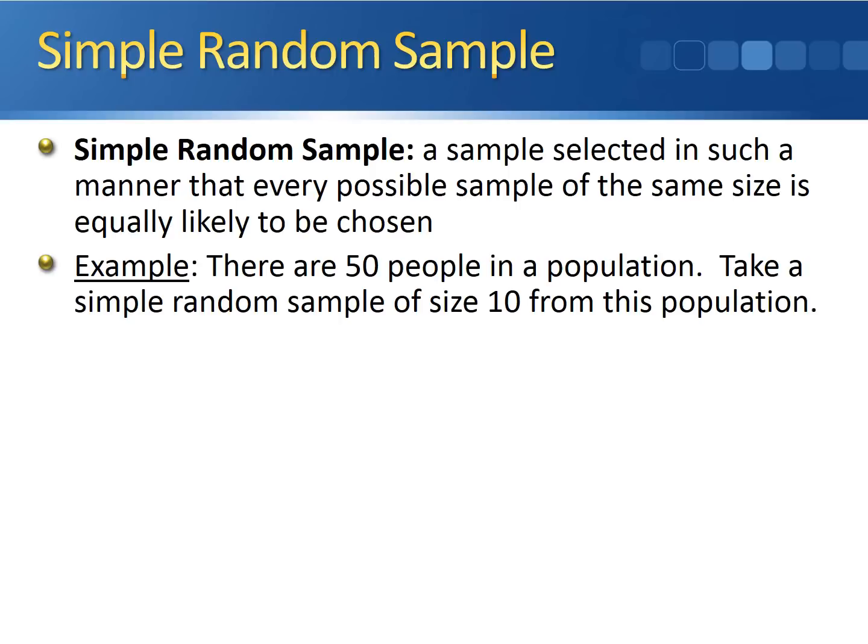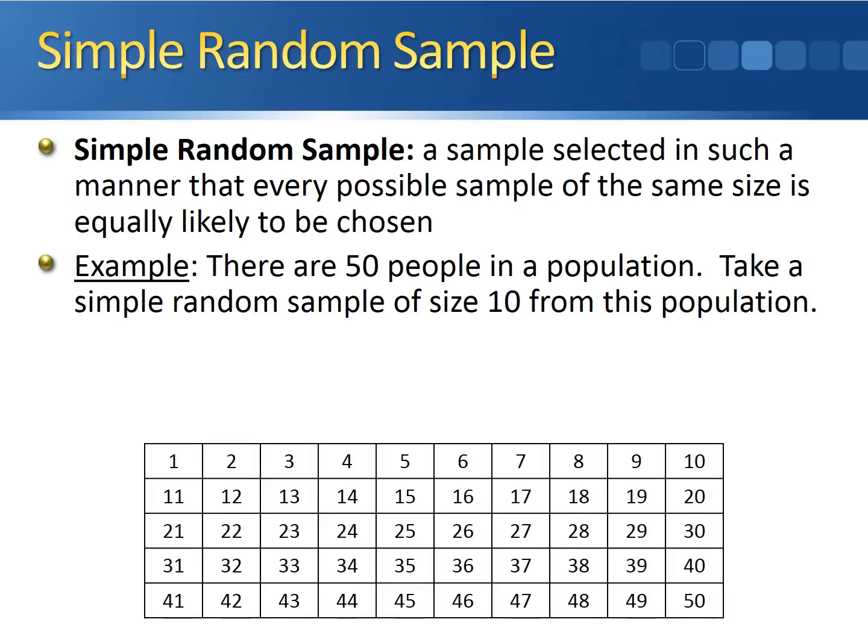For example, let's say we have a population that has 50 people in it. We want to take a simple random sample of size 10 from this population. What we can do is assign every person in this population a number between 1 and 50. A simple random sample is basically writing down the numbers from 1 through 50 each on their own little slip of paper, putting those slips of paper in a hat, and pulling out 10 of them.